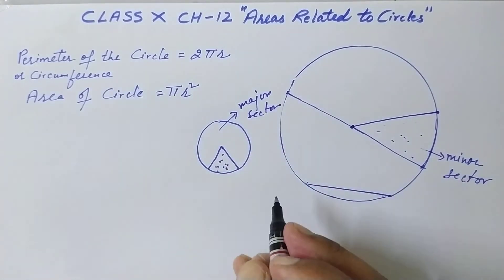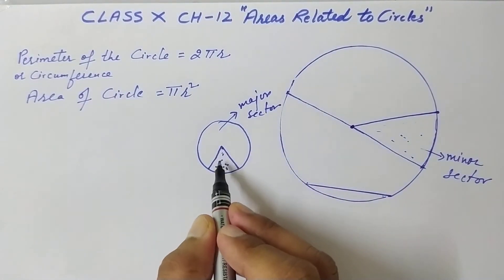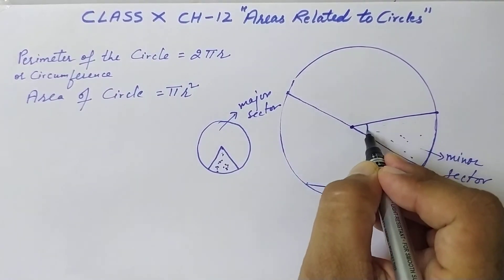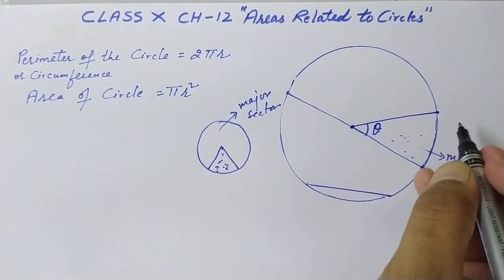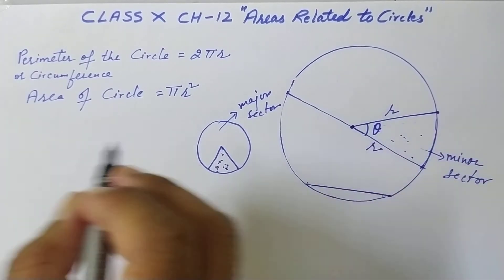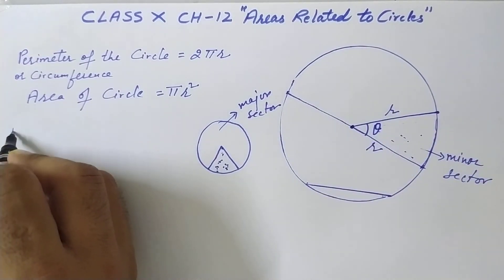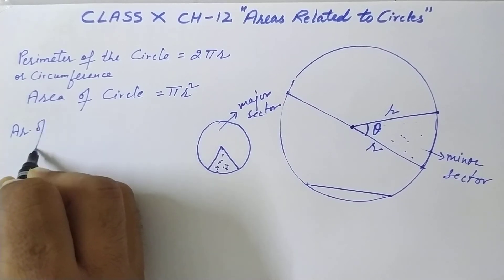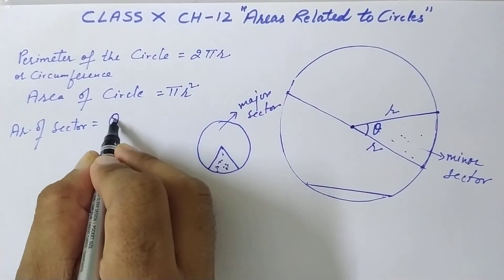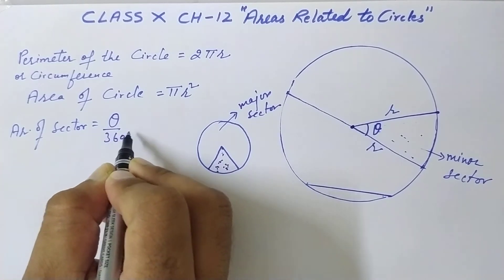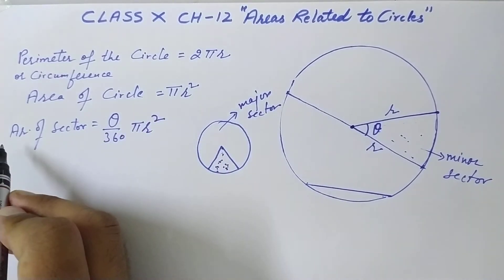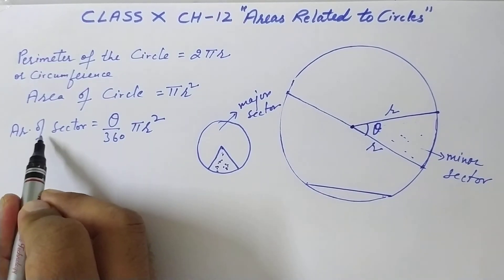So how do you find the area of a sector? If the angle is θ and the radius is r, the formula for area of sector is: θ/360 × πr².